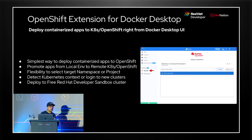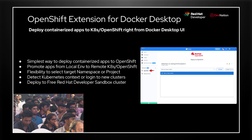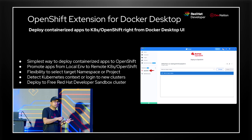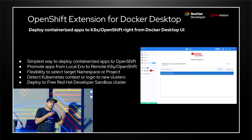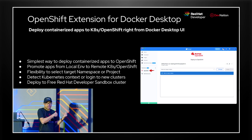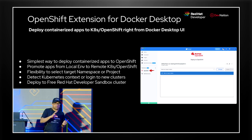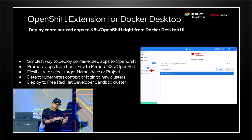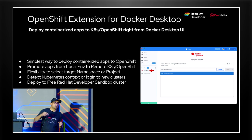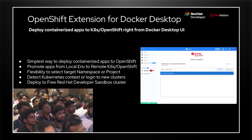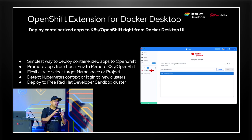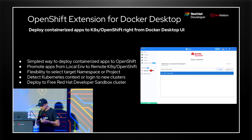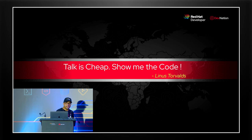The next tool is the OpenShift extension for Docker Desktop. If you're using Docker Desktop, you can go to the extension option and get an extension through which you can seamlessly push your local containers or images to a remote OpenShift or Kubernetes cluster. It's a one-click deployment - just provide the credentials and endpoint where you want to deploy. As a developer you can easily showcase your app to colleagues without needing to write YAML files or deal with manifests.